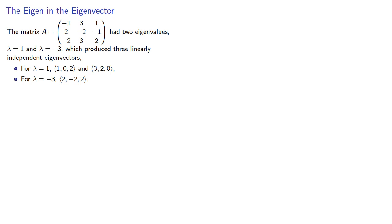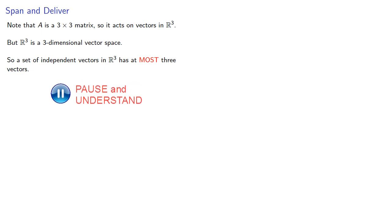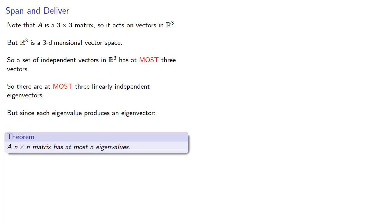And so the question you gotta ask yourself is: Could there be more eigenvalues and eigenvectors? So the important observation to make is that A is a 3 by 3 matrix, so it acts on vectors in R3. But R3 is a three-dimensional vector space, so a set of independent vectors in R3 has at most three vectors. So there are at most three linearly independent eigenvectors. But since each eigenvalue produces an eigenvector, then an n by n matrix has at most n eigenvalues.